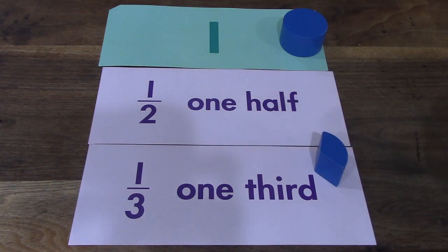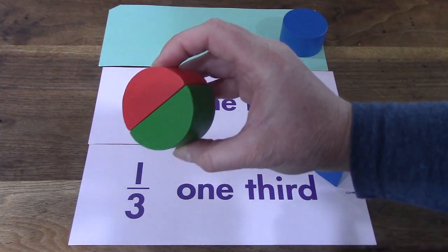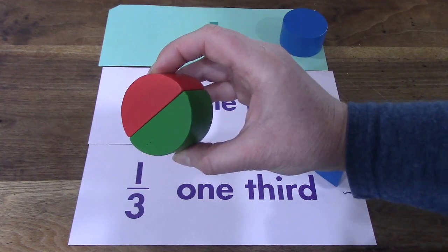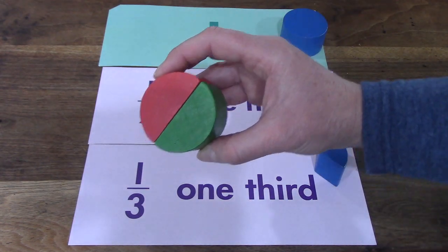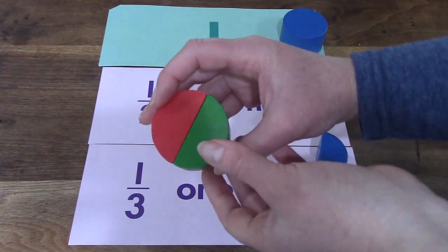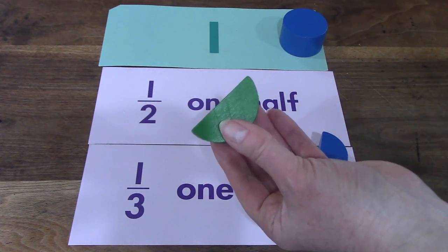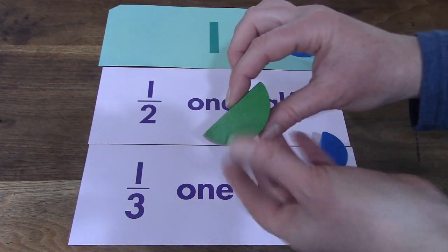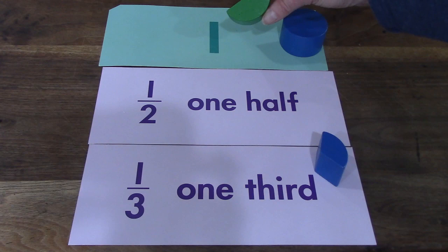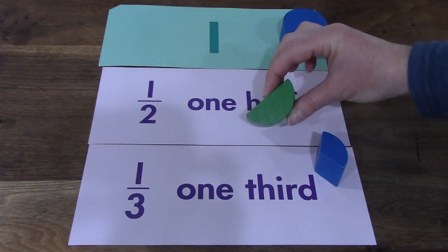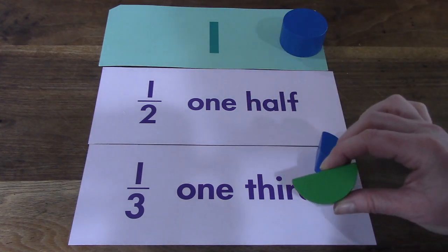I have another circle for you. This one is broken into two pieces. If I keep one of the pieces, would it be one circle, one-half circle, or one-third of a circle?